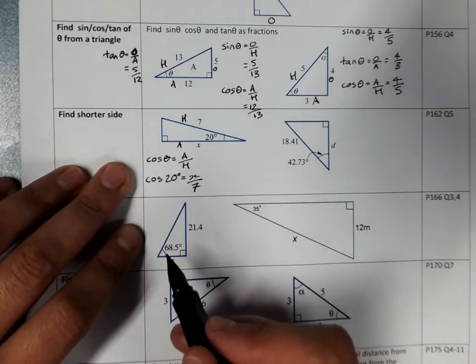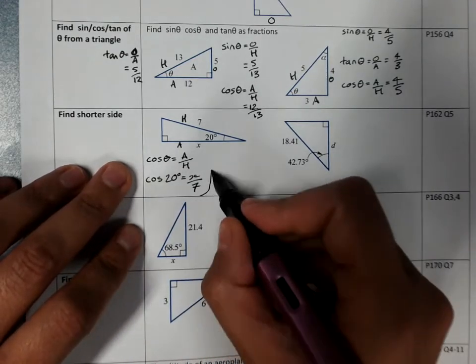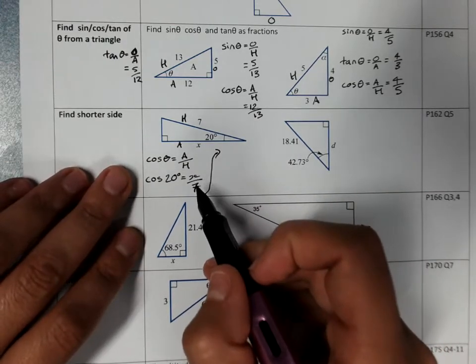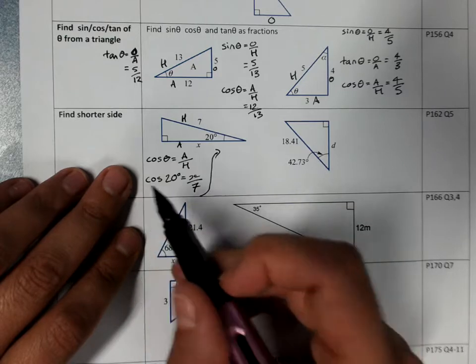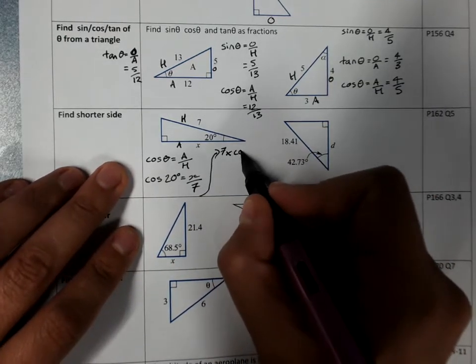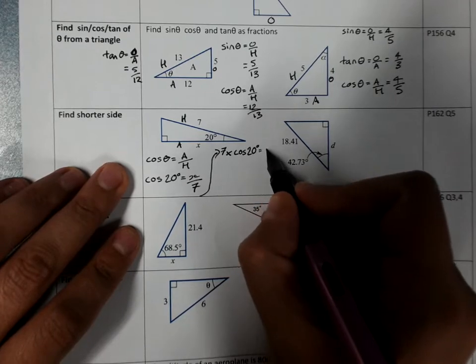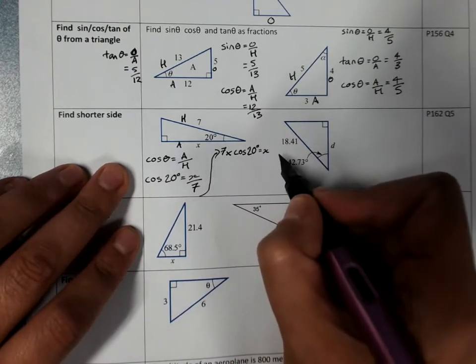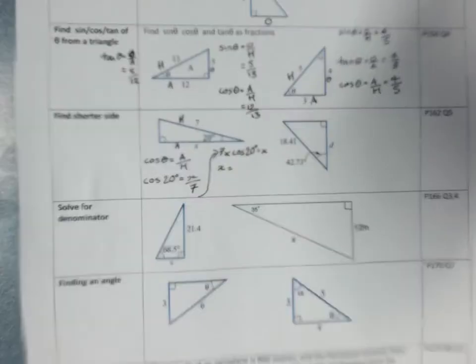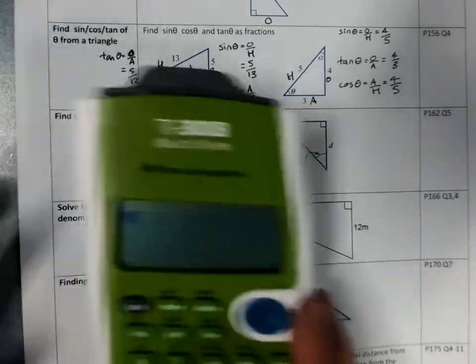Substitute in the values, including the angle. Normally we'd put these underneath each other. I'm going to have to move up to here. Rearrange to get x on its own. I've got x divided by 7. That'll mean I'll multiply by 7. 7 times cos 20 degrees equals x. And that tells me what to type into my calculator to get x. Which is why it's a good idea to do your working and then grab your calculator.